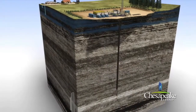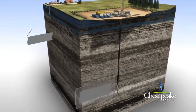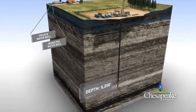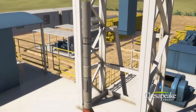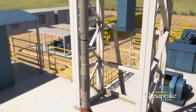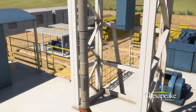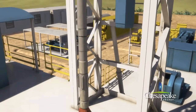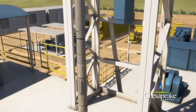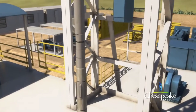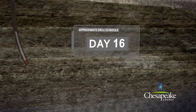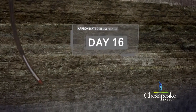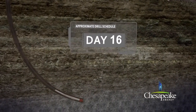A few hundred feet above the target shale, the drilling assembly comes to a stop. The entire string is retracted to the surface to adjust the drilling assembly and install a special drilling tool. This tool allows Chesapeake to gradually turn the drill bit until a horizontal plane is reached.